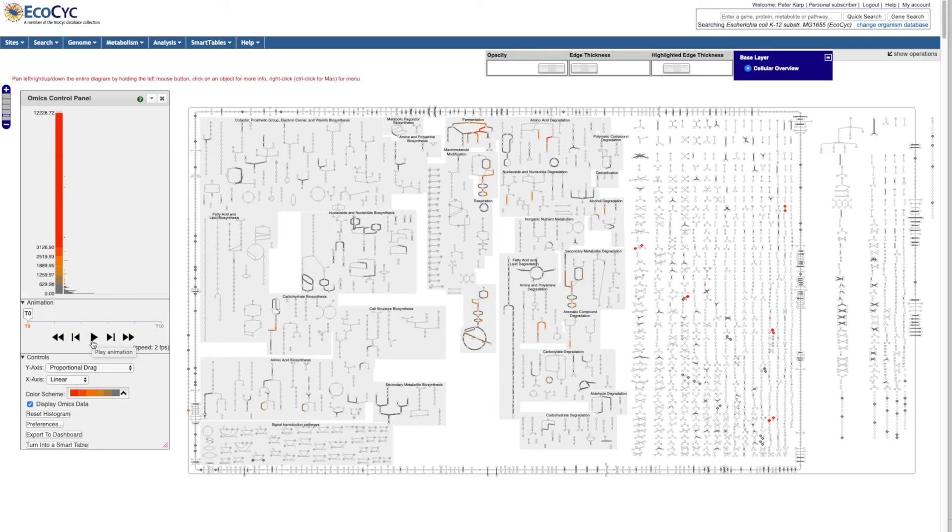We can also paint omics data onto the cellular overview diagram. In this case, we're painting a transcriptomics dataset onto the E. coli cellular overview diagram.